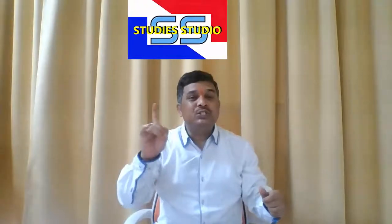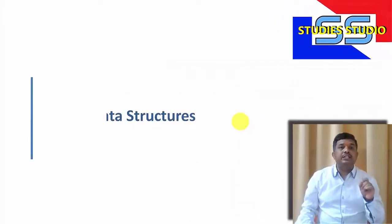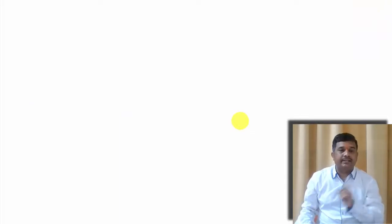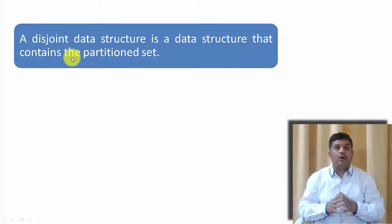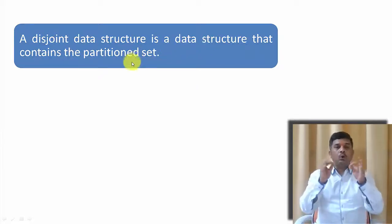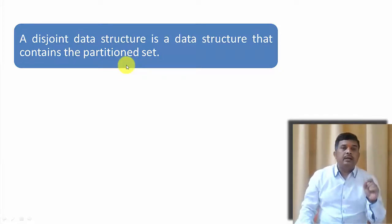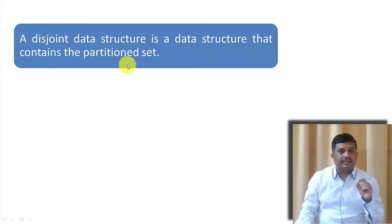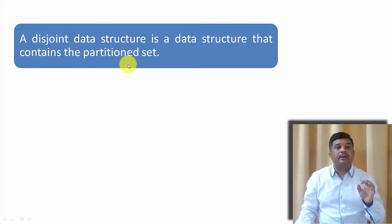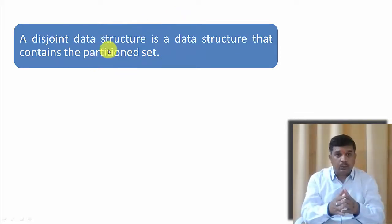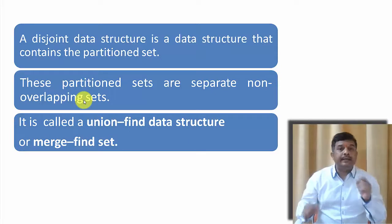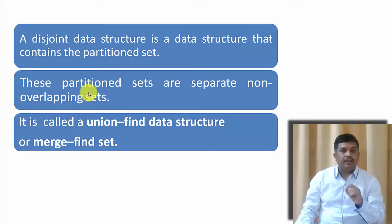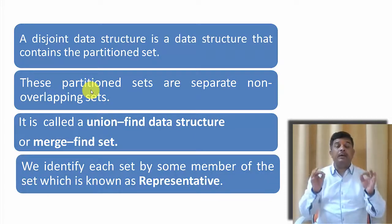So let us start Disjoint Set Data Structure. Basically, Disjoint Set Data Structure is a data structure that contains the partition set. If you remember the set theory, when we say that two sets are partitioned or two sets are disjoint, there is no common element between these two sets. Such sets are also known as Partition Sets, and these partition sets are separated by non-overlapping sets. It is also called as Union Data Structure or Merge Find Data Structure. And we identify each set by a member, which is known as representative.